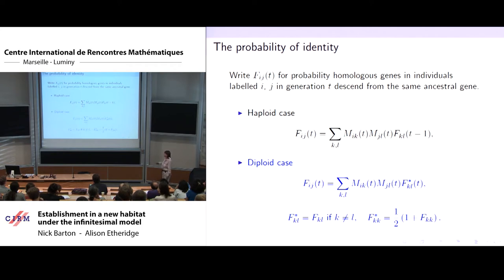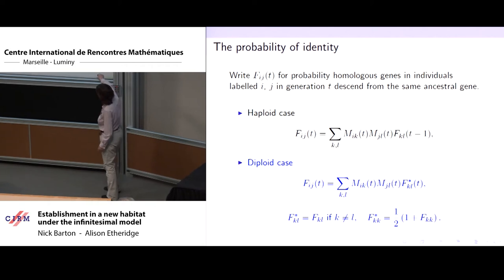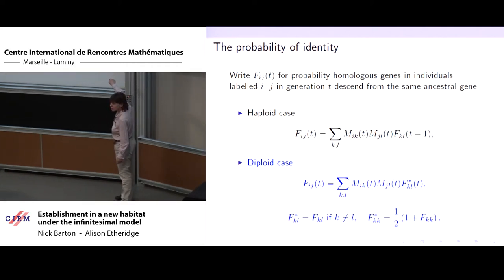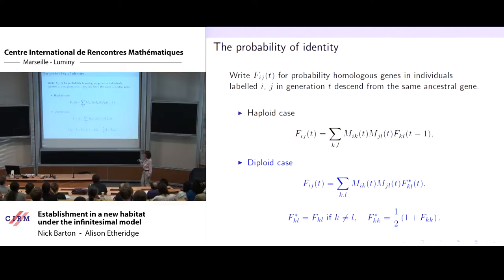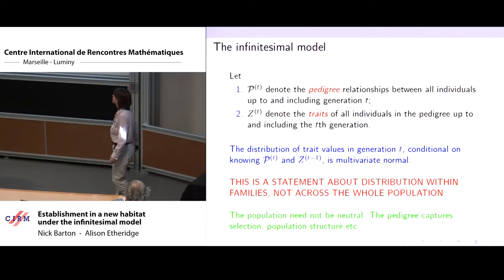In the diploid case, we write down a corresponding recursion — if we sample the two genes within an individual uniformly at random, there's probability half of picking the same gene. But focusing on the haploid case: there's a simple recursion telling me, if I sample one gene from individual I and one from individual J at time T, what's the probability they were inherited from the same ancestor. So the pedigree gives us this key information about inheritance.